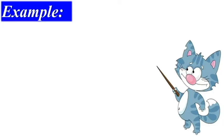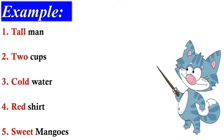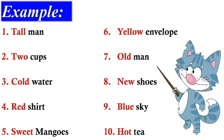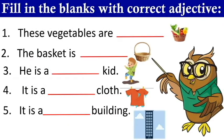Similarly, tall man, two cups, cold water, red shirt, sweet mangoes, yellow envelope, old man, new shoes, blue sky, hot tea — all of these are having adjectives highlighted in red. Now we are going to do some activities.